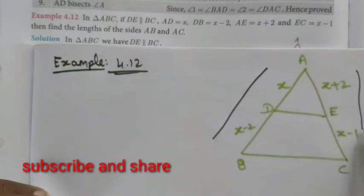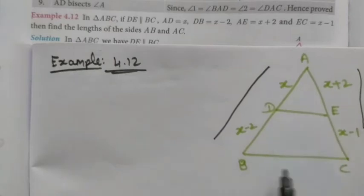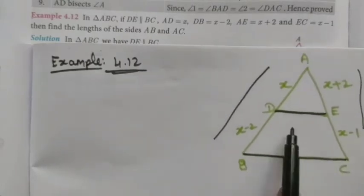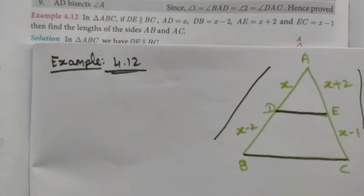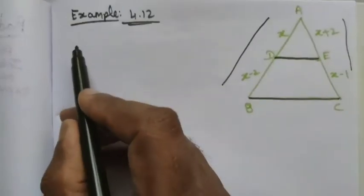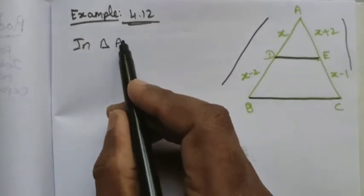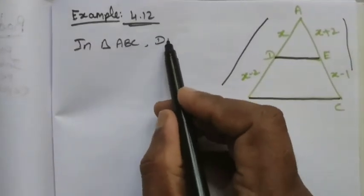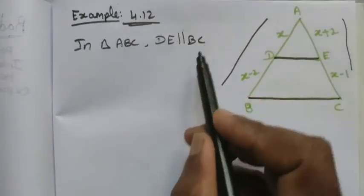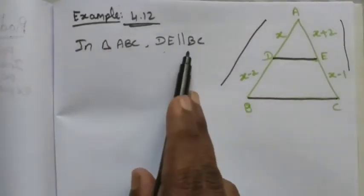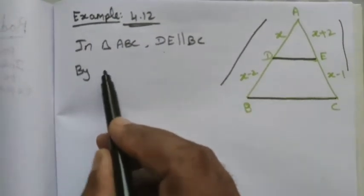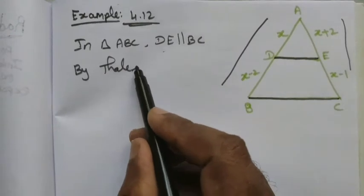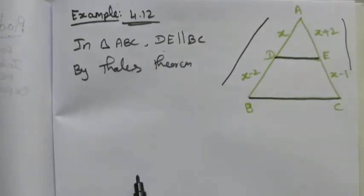We want to find the lengths of sides AB and AC. This is the diagram — triangle ABC — and DE is parallel to BC. By the parallel conditions, we apply the Basic Proportionality Theorem. In triangle ABC, DE is parallel to BC, which is the given condition. So by Thales theorem, or the Basic Proportionality Theorem (BPT):